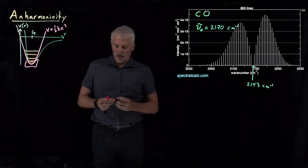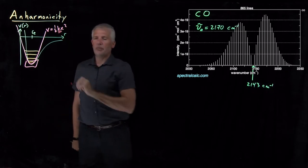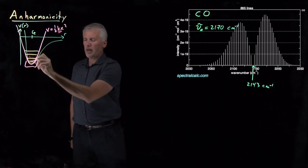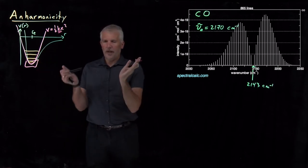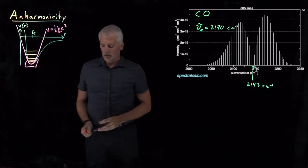In particular, this k in the harmonic oscillator model describes the curvature of this parabola. A large value of k would be a steeper curve. A small value of k would be a softer, looser curve.